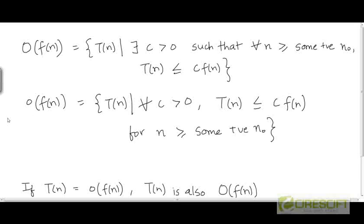We can also provide a set-theoretic definition of little-o, very similar to how we defined big-O. Big-O was defined to be the set of all functions t such that t can be upper bounded by some constant multiple of f — that is, there exists a constant c greater than 0 such that t is upper bounded by c times f, for all n sufficiently larger than some positive threshold n₀. The key point is that we only require the existence of some constant for which t is upper bounded by c times f; it need not hold for all constants.